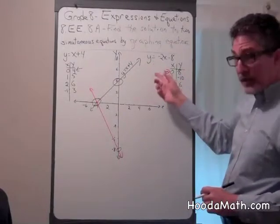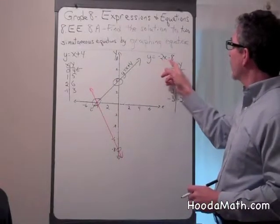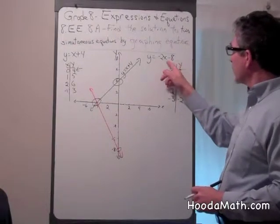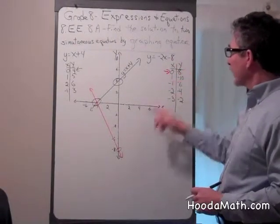For the second linear equation, y equals negative 2x minus 8, if I substitute 0 for x, y equals negative 8.